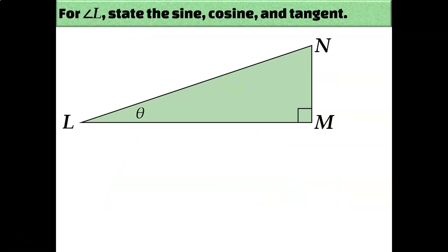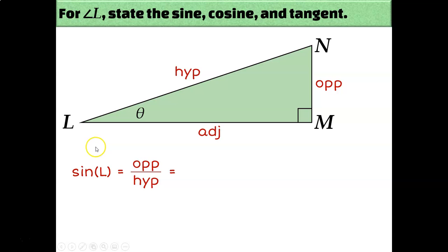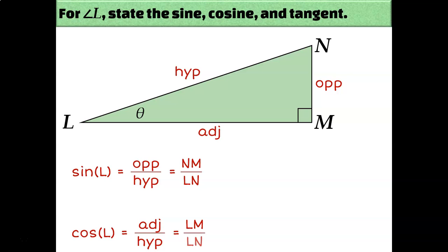Let's try another one. The hypotenuse for this triangle is LN because it's across from the right angle. The adjacent side is LM because it's right next to the angle. The opposite side is NM, on the other side of the triangle from the angle. Sine of angle L is opposite over hypotenuse: NM over LN. Cosine is adjacent over hypotenuse: LM over LN. Tangent is opposite over adjacent: NM over LM.